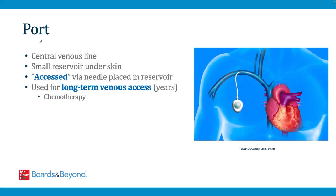A port is another type of central venous line — a small reservoir placed under the skin, attached to a catheter threaded to the cavoatrial junction. The port is accessed by a needle placed in the reservoir. Ports are long-term venous access devices that can be used for years, typically placed for patients requiring medications like chemotherapy over a long period of time.